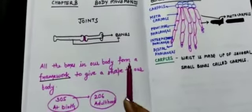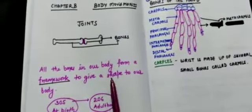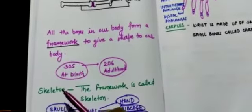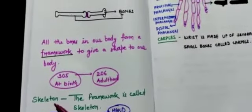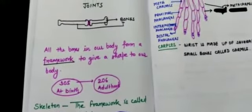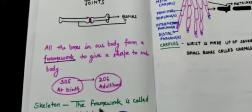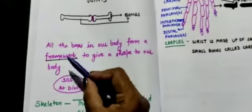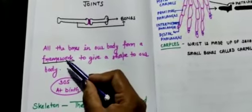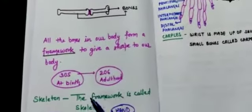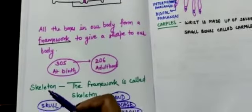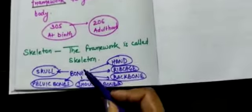All the bones in our body form a framework to give a shape to our body, and this framework is known as the skeleton. Bones are very useful for making one framework — they give our whole body a frame, and that frame is known as the skeleton.